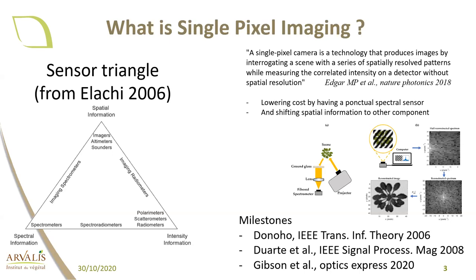The main milestones in this technology are: first, the theoretical proposition of compressive sensing proposed by Donoho in 2006; Duart et al. is the paper that made these techniques more broadly accessible; and Gibson et al. is a quite complete recent review about single pixel imaging.